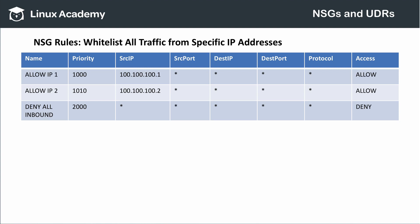Now let's look at a whitelist — all traffic is denied except from specified IP addresses. Azure first looks to see if the source IP is 100.100.100.1; if not, it checks for 100.100.100.2; if it is, access is allowed; if not, Azure denies the connection. The processing order is the same and the rules are very similar, but the outcome is different. What matters most is the order in which the rules are processed.